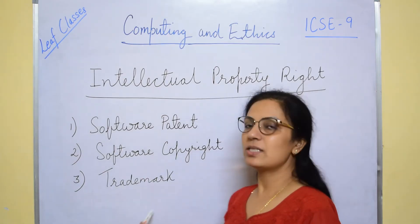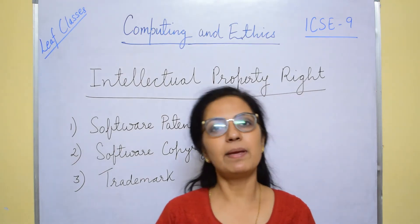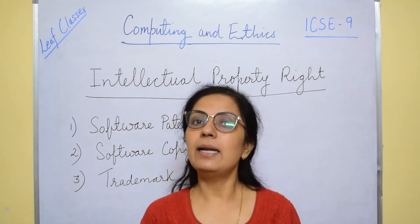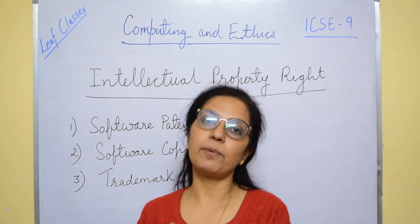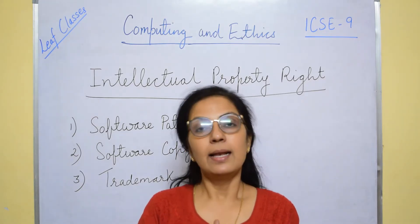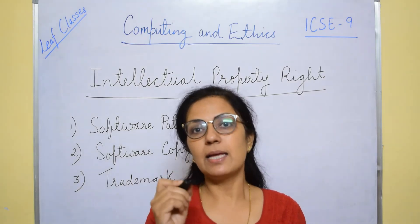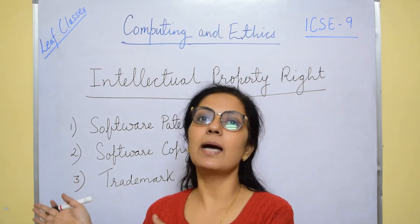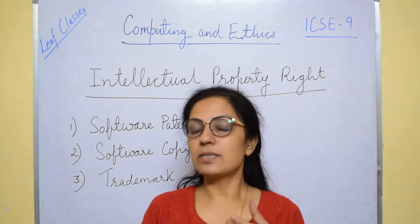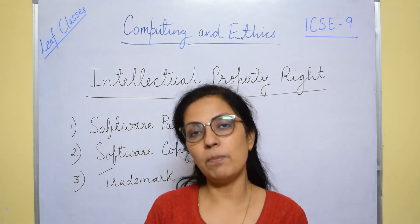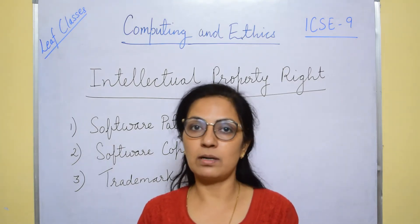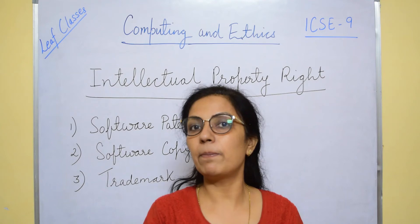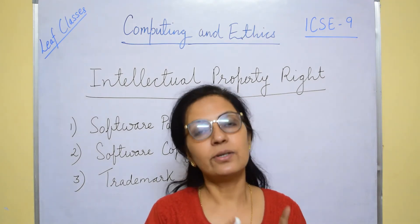The next point is trademark. A trademark can be a phrase, a word, or a symbol that denotes a product and legally differentiates it from other products of the same kind. For example, the Woodland mark differentiates Woodland t-shirts or shoes from other brand companies. Sometimes a trademark is even more important than the product itself — you may prefer a branded product only because of its trademark.